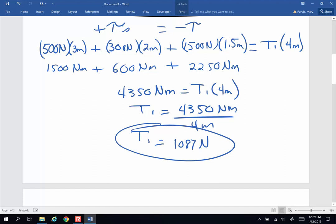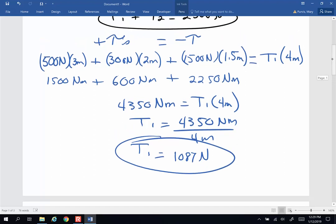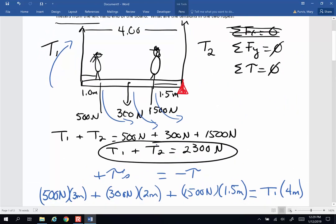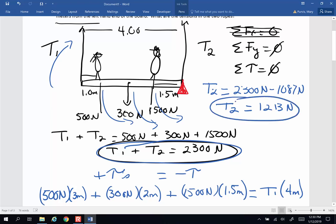Well then how am I going to find the other tension? I am going to use my other equation right here. So tension number two is going to be 2300 newtons minus what I got for tension one, which was 1087 newtons. And tension two ends up being 1213 newtons. So 1213 newtons is the tension in one rope. 1087 is the tension in the other rope.